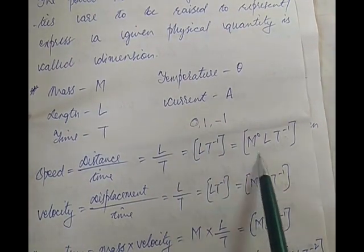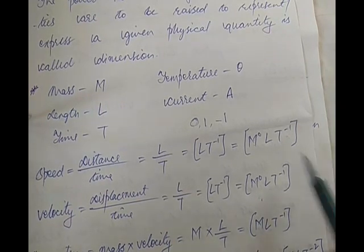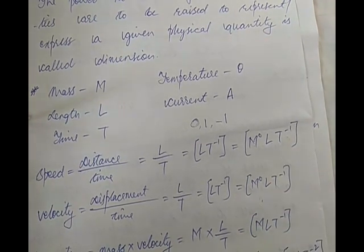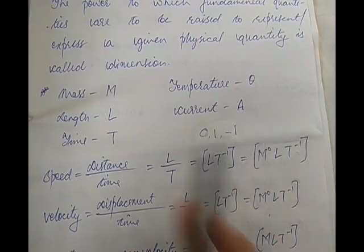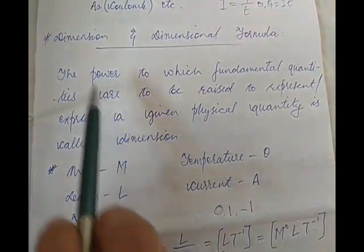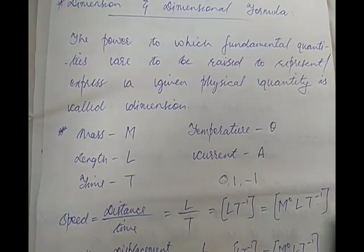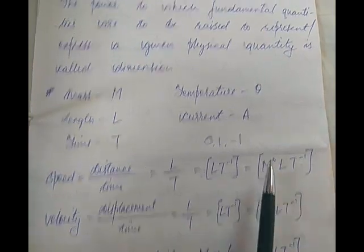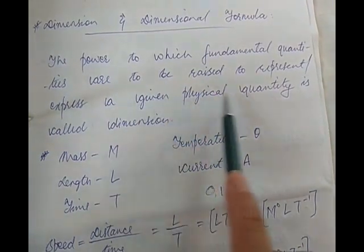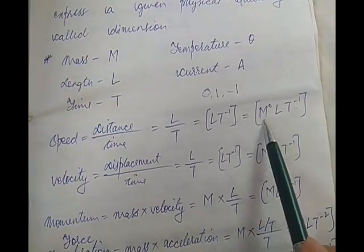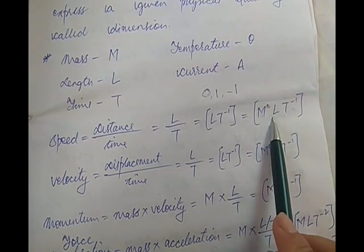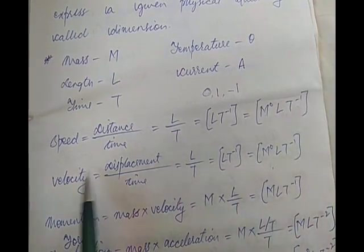The dimensional formula is M⁰LT⁻¹, whereas the dimension is the powers: 0, 1, minus 1. Now in some books, and some people very often call the dimensional formula as dimension itself. Sometimes I myself call the dimensional formula as dimension. But actually, to be very precise, the dimension is the power.